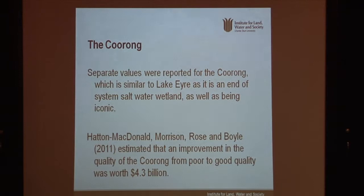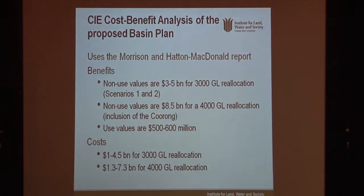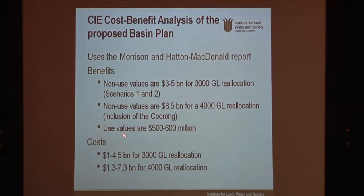We estimated separate values for the Coorong because it's not really a river — it's a bit different, and it's similar to Lake Eyre. We found it actually has a really large value: an improvement from poor to good quality was estimated at $4.3 billion. The Centre for International Economics then did a cost-benefit analysis of the proposed Basin Plan using our report. They found that for a 3,000 gigalitre reallocation, non-use values were between about $3 and $5 billion — or closer to $8.5 billion if you included the Coorong and a larger reallocation. Use values were $500 to $600 million. Costs for the 3,000 gigalitre reallocation were about $1 to $4.5 billion, and for 4,000 gigalitres, $1.3 to $7.3 billion.